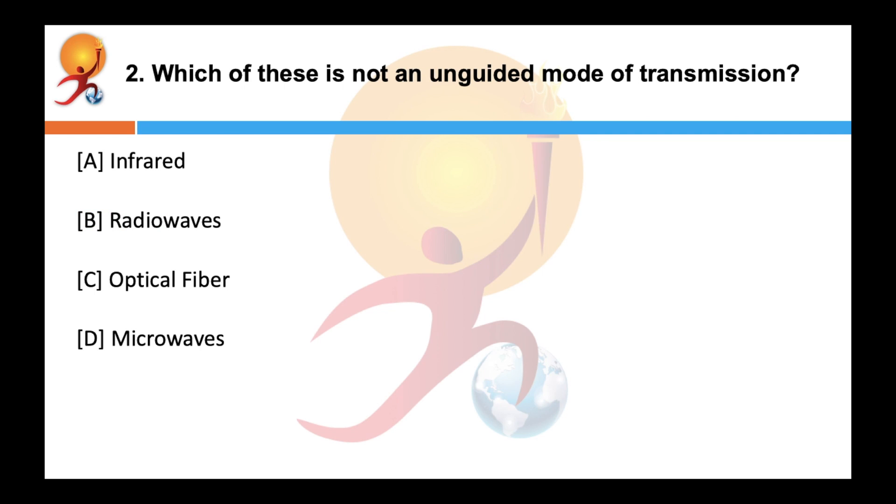Which of these is not an unguided mode of transmission? Correct answer is C, optical fiber. In unguided transmission, no physical medium is required for the transmission of electromagnetic signals. There are three major types of unguided mode of transmission: infrared, radio waves and microwaves. Hence, the answer is C.